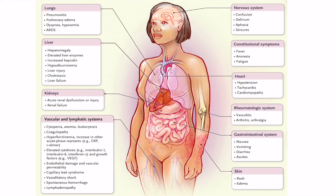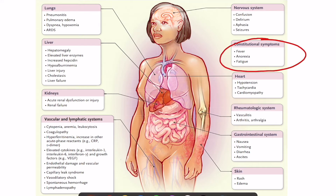Looking at the features, there are constitutional symptoms like fever, anorexia, and fatigue. There can also be specific organ symptoms, especially in the lungs, ranging from pneumonitis to ARDS as seen in COVID-19. In the liver, there can be hepatomegaly and elevated liver enzymes leading up to failure. The kidney can have acute renal injury or failure. In the nervous system, features can range from confusion and delirium to seizures.